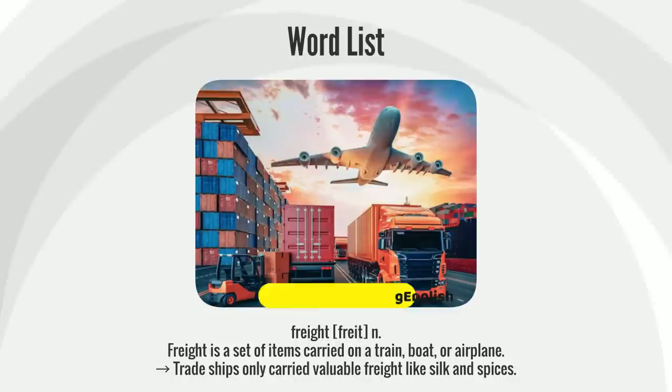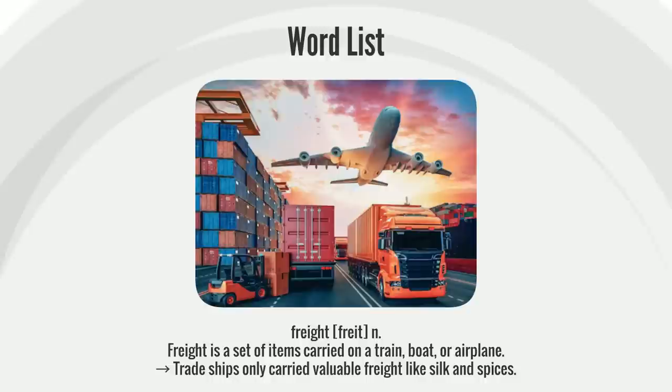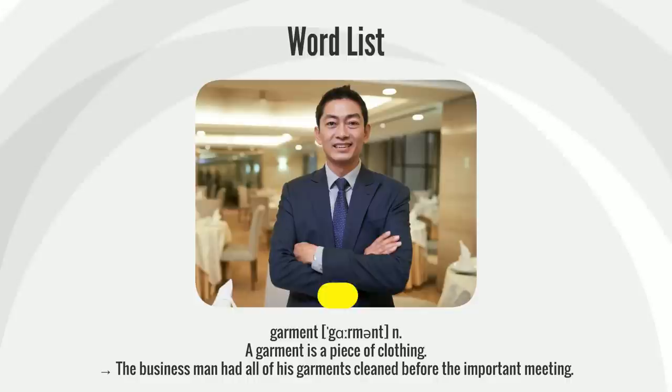Freight is a set of items carried on a train, boat, or airplane. Trade ships only carried valuable freight, like silk and spices.